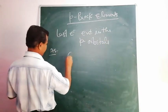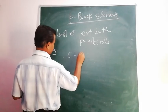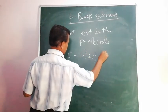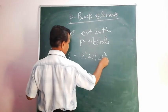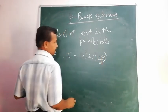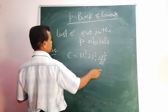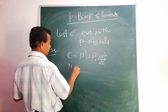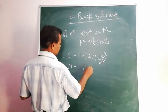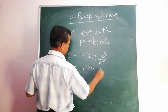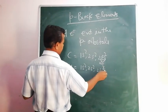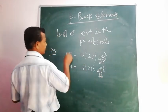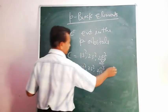For example, Carbon: 1s², 2s², 2p². Here the last electron enters the p-orbitals, so it is a P-block element. Similarly, other elements whose last electron also enters the p-orbitals are P-block elements.